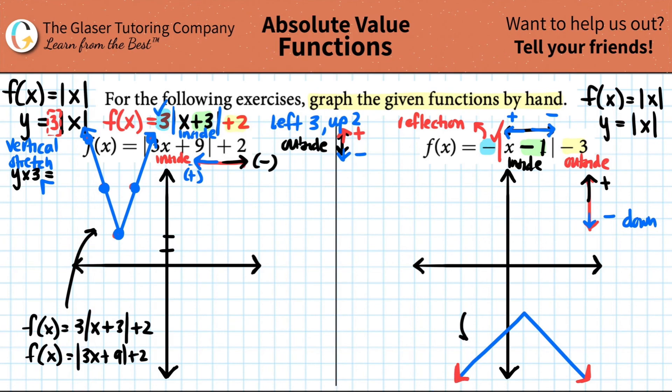And this would be f of x equals negative times the absolute value of x minus one minus three. And there you go.